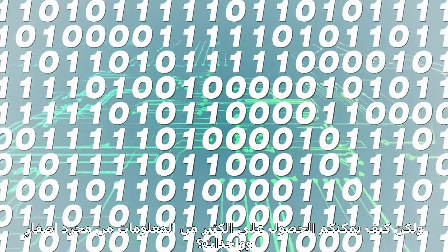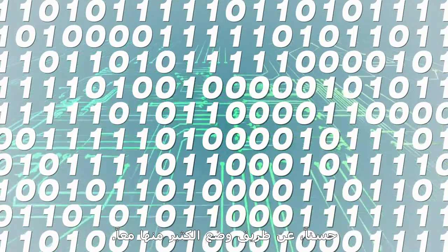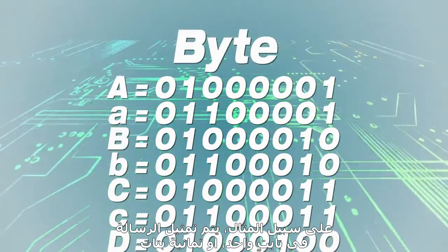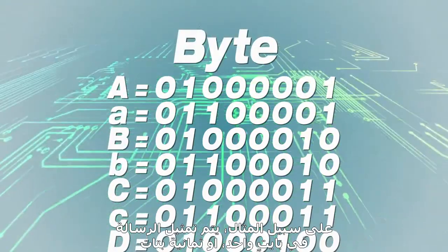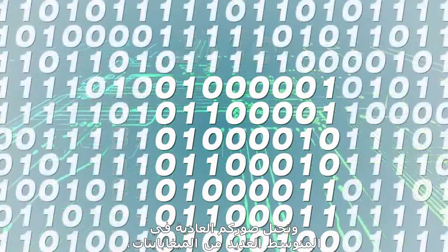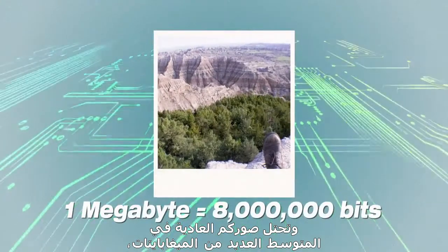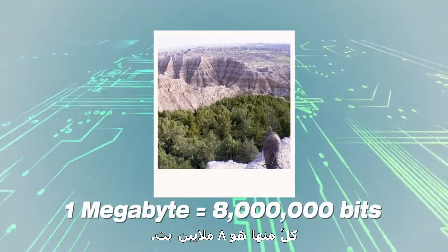But how can you get so much information out of just zeros and ones? Well, by putting lots of them together. For example, a letter is represented in one byte, or eight bits, and your average photo takes up several megabytes, each of which is eight million bits.